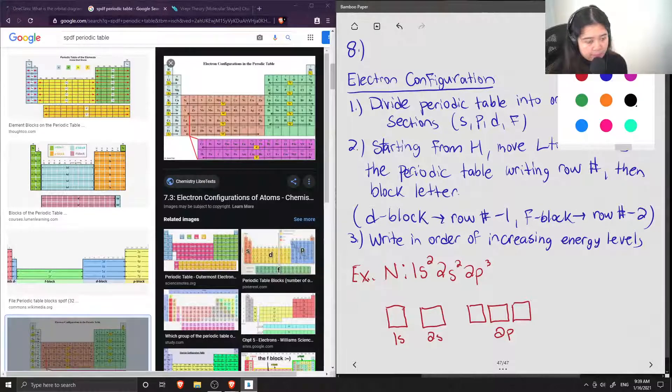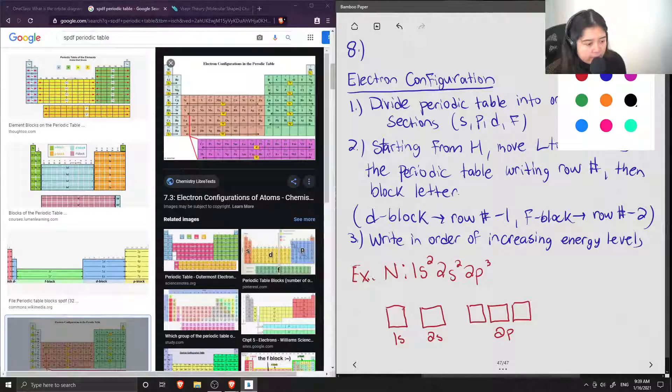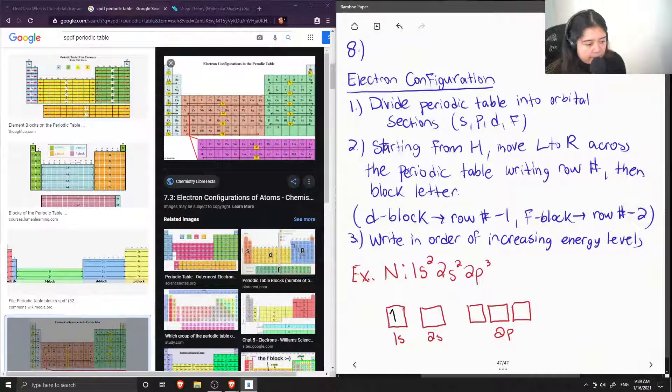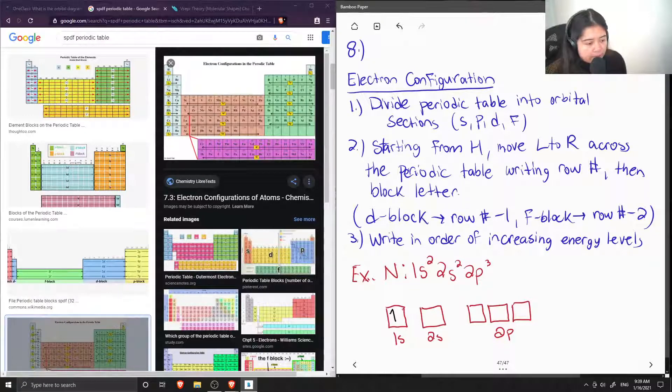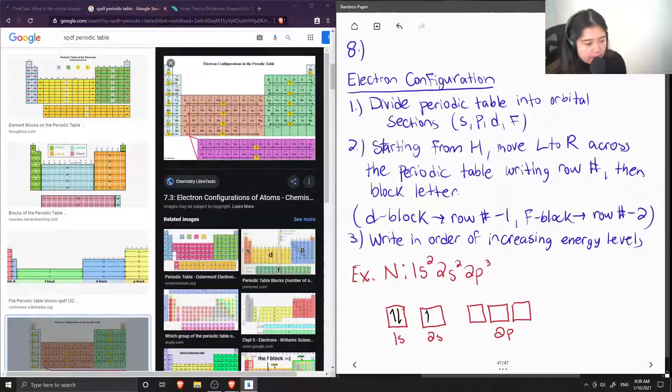And now we just need to fill in our electrons. So in the 1s orbital, we write an electron that is orientated spinning up and then another spinning down. And then once we get to the 2s orbital, we do the same thing.